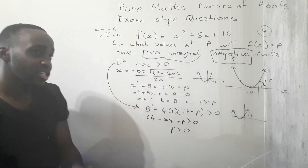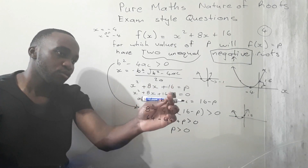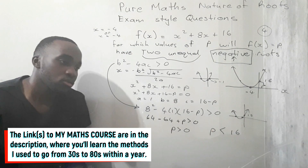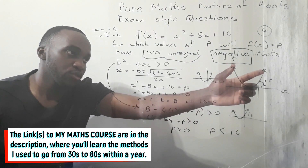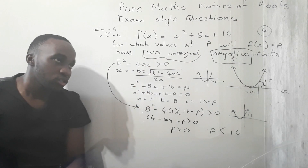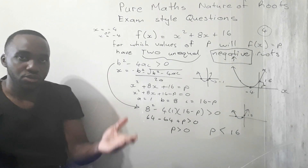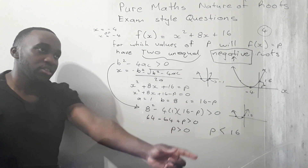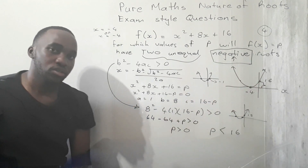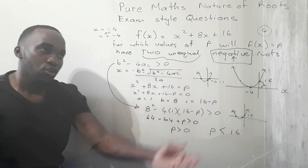So the final answer is: p must be bigger than zero, but you cannot move the graph more than 16 units downwards, so p must also be smaller than 16. That gives 0 < p < 16. You can move the graph a maximum of 16 units downwards and it will always have roots that are negative and not equal to each other — 16 is not included.